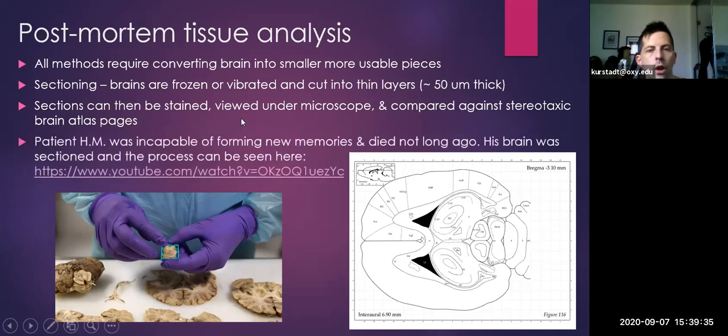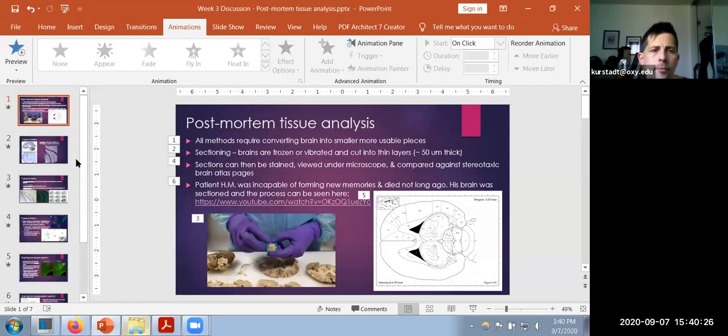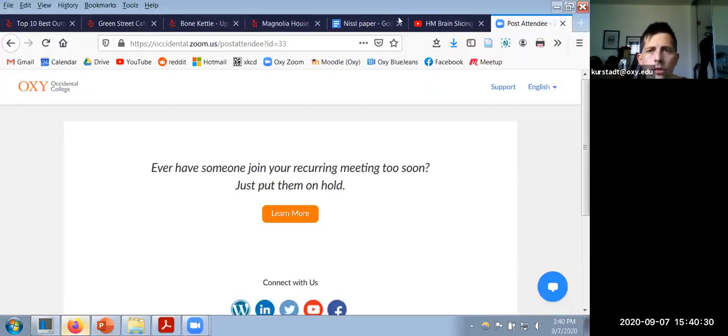You may be wondering, why would we care about sectioning down the brain aside from being able to stain it? Sometimes we want to see what the general effects on anatomy are from certain surgeries. For instance, patient HM - he is an important case for psychology studies on memory because he had a surgery to treat epilepsy that scooped out parts of his brain involved with the formation of new memories. He could remember old things, but could not create new memories after the surgery happened. He died within the last 10 or so years, and his brain was donated to science.